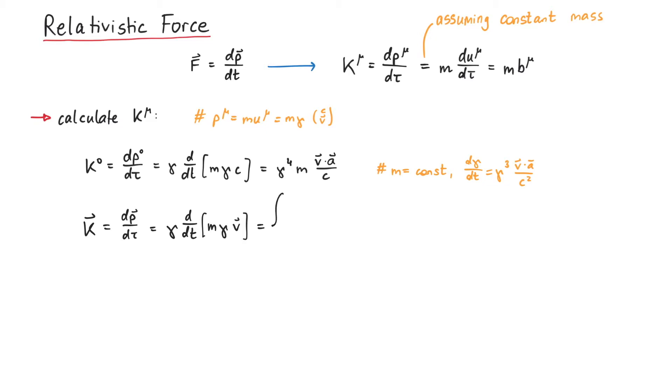We now have two options to write this. On one hand, the time derivative of 3-momentum is exactly the classical 3-force, so we can write this as gamma times f. On the other hand, we can use the product rule between gamma and v in order to calculate an explicit expression.